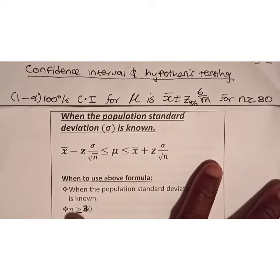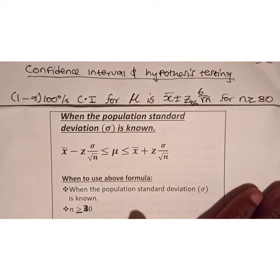Let's start with the confidence interval for the mean. We use this when the sample size is greater than or equal to 30 or the population variance is known.